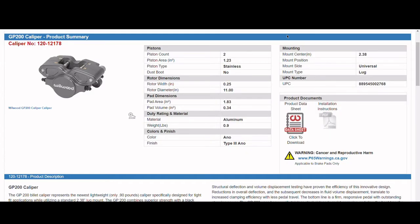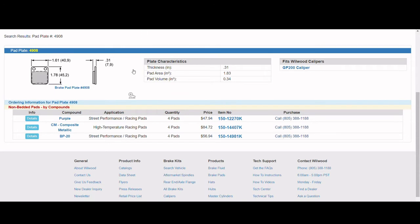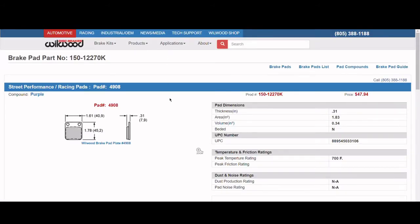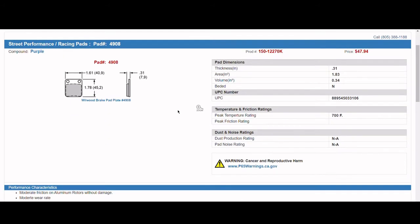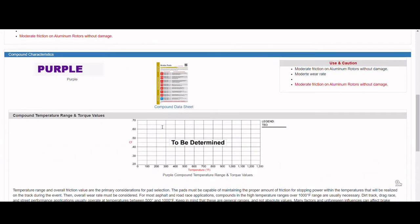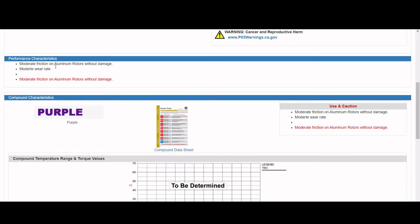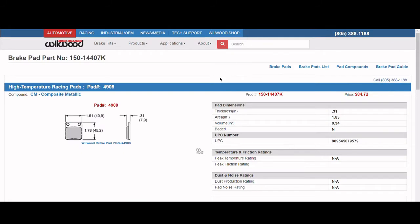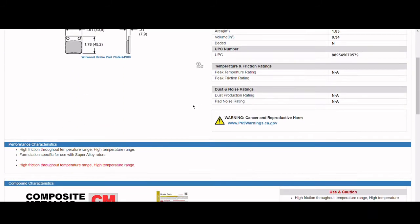Once the calipers were selected, the next step was to select pads and rotor material. Wilwood has an extensive amount of information on each caliper's pads, their compounds, and the recommended use. This, however, also limited the amount of rotor material options available to us. The rotor materials that the pads could be used with included aluminum, cast iron, stainless steel, and titanium. When selecting rotor materials, the team considered cost, thermal properties, mechanical properties, and machinability.